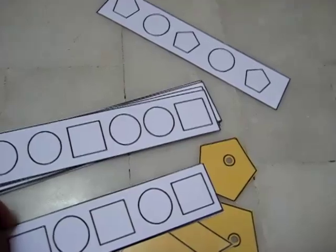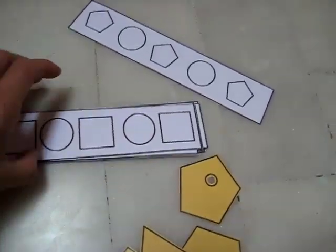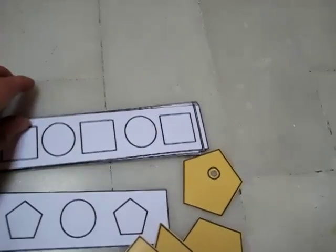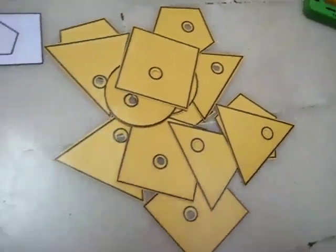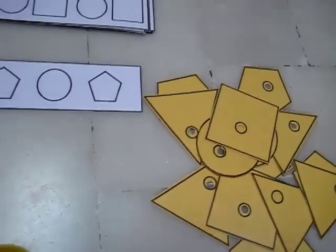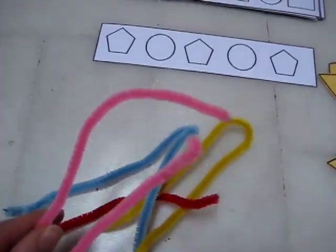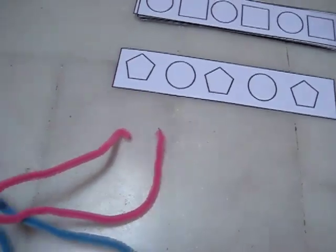So what your child does is she takes a pattern and she has the shapes right in front of her. You can use either a shoelace or a string. Right now we're using some little wires, some pipe cleaner wires in different colors.